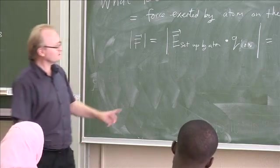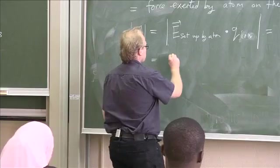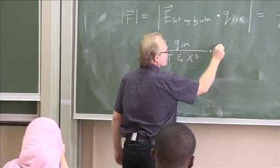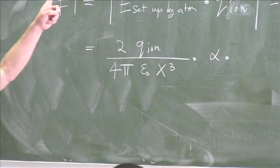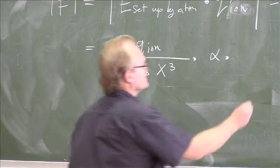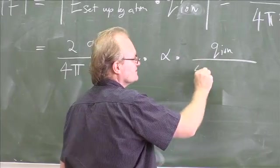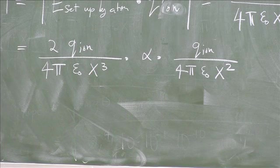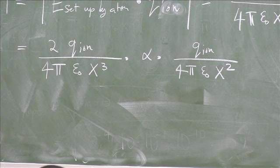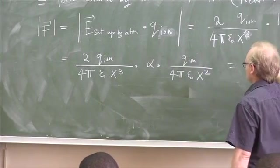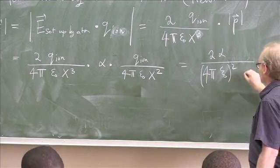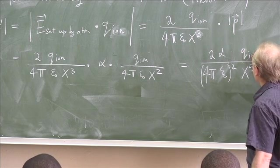And now it will be alpha. So we'll have 2 times the charge of the ion over 4π ε₀ x cubed, times alpha, times the electric field set up by the ion, which is the charge of the ion over 4π ε₀ x squared — that's how the field falls off for a point charge. Let's collect all of the factors together. This looks like 2α over (4π ε₀)² times x to the 5, times q_ion squared.